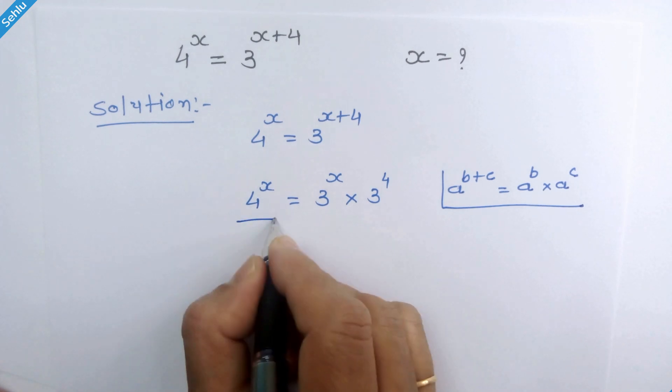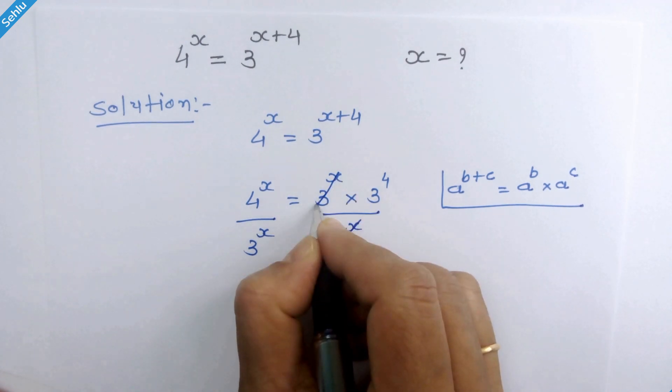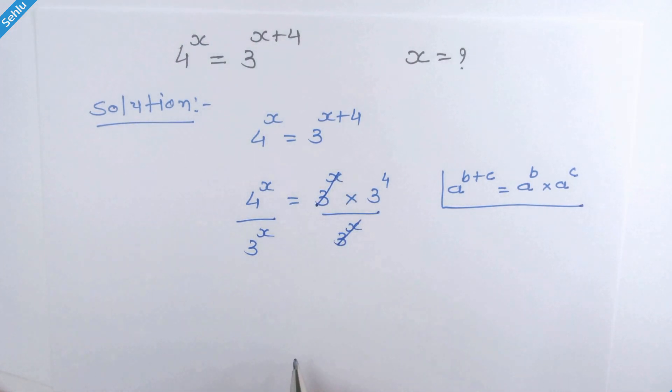Now we will divide with 3 raise to x both sides. So these two will cancel each other. So what remains is 4 raise to x over 3 raise to x is equal to 3 raise to 4.